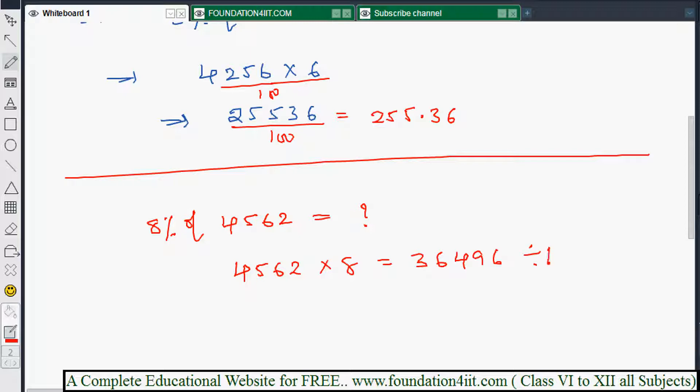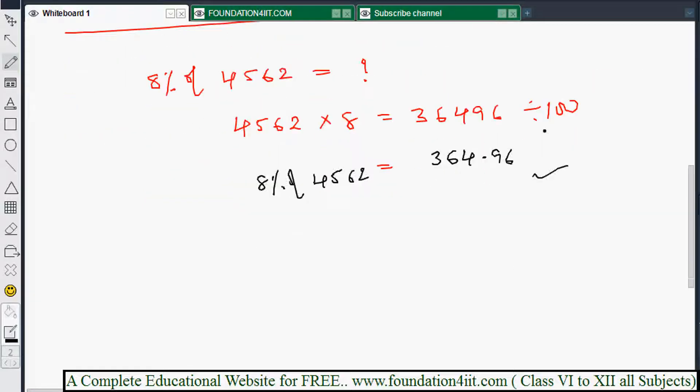This one you should divide by 100. That means what you'll do is just leave two decimal places. Two decimal places if you leave, then the point must be at 364.96. This is the value of 8% of 4562. The answer is 364.96. This is a simple value. Any number we can do the same. You can take two-digit numbers also.